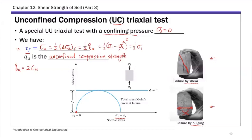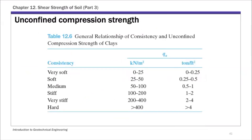That is basically the last type of triaxial test covered in this chapter. This table shows the general relationship of consistency with the unconfined compression strength q_u. For very soft clay, q_u is 0 to 25. As the stiffness of the clay increases, the unconfined compression strength q_u increases as well. These are typical ranges of unconfined compression strength for clays.